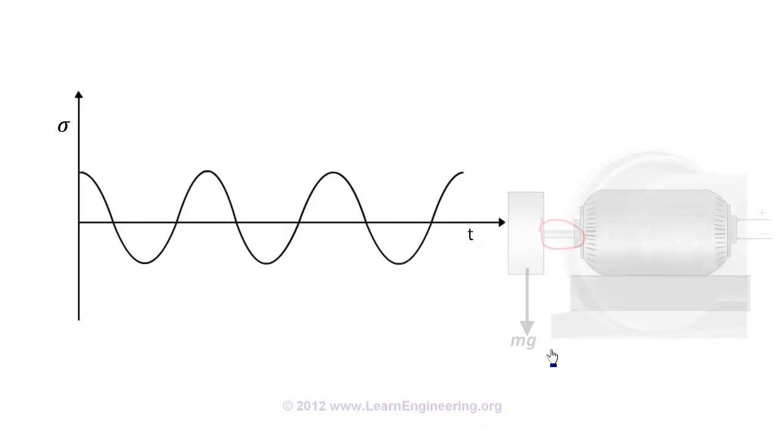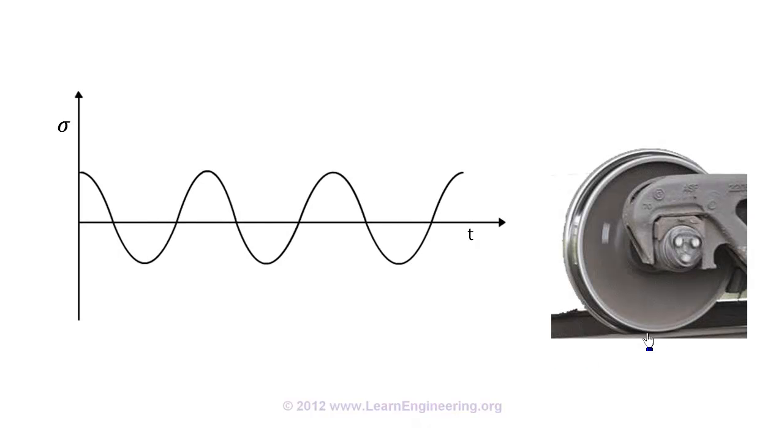This rail wheel when it is contact with the track, produces a high contact stress. But when the wheel rotates stress gets relieved, when it comes back to original position contact stress arises again.